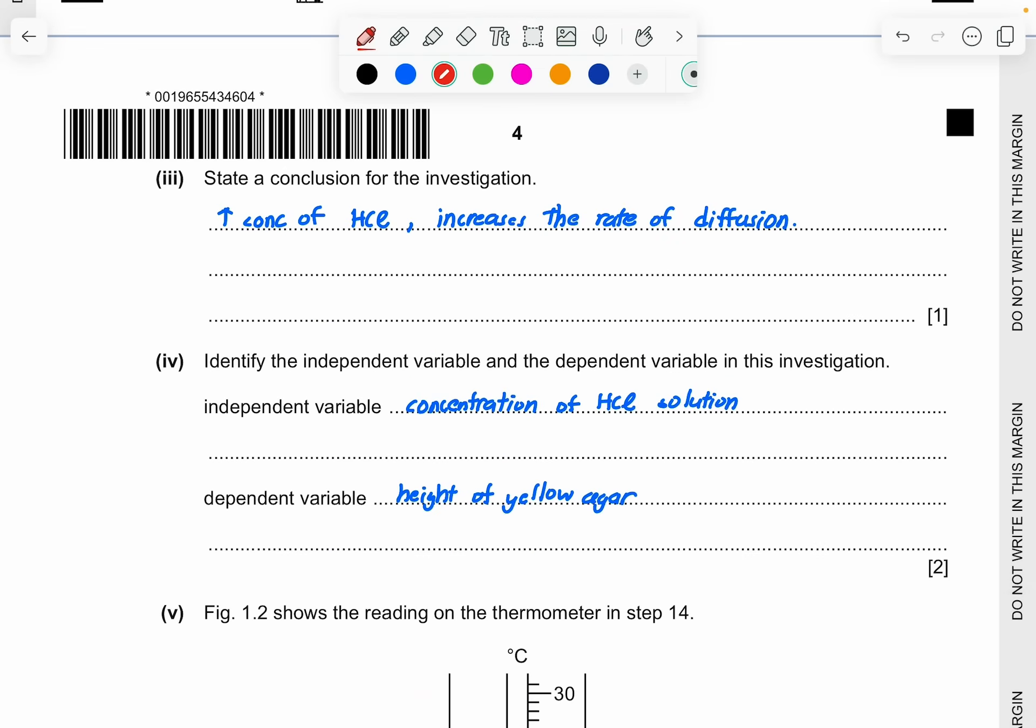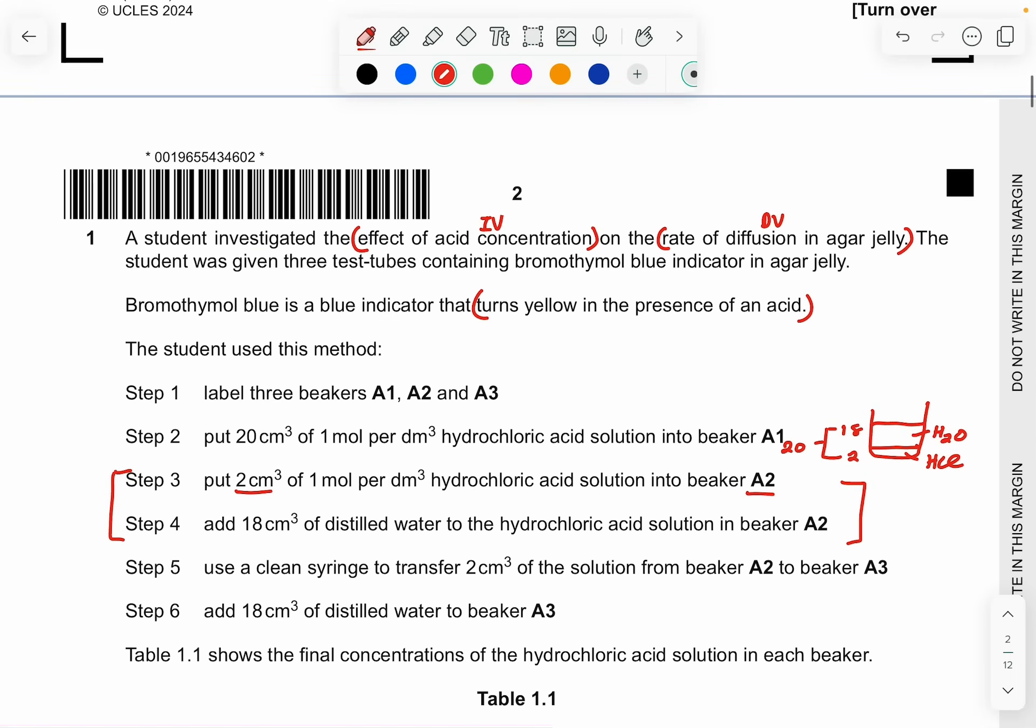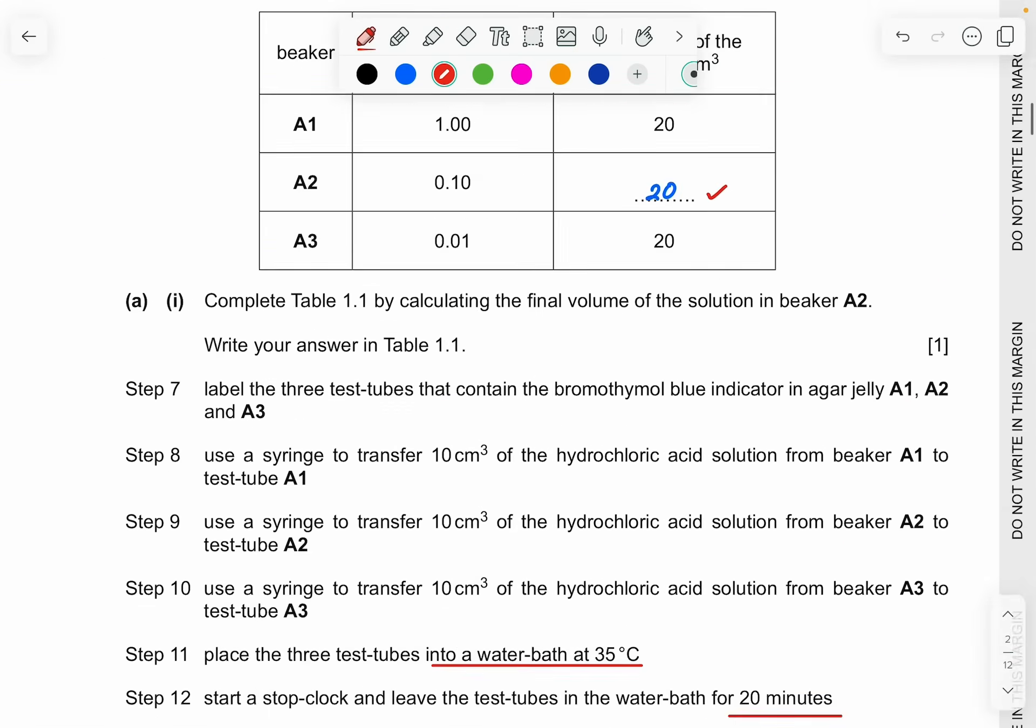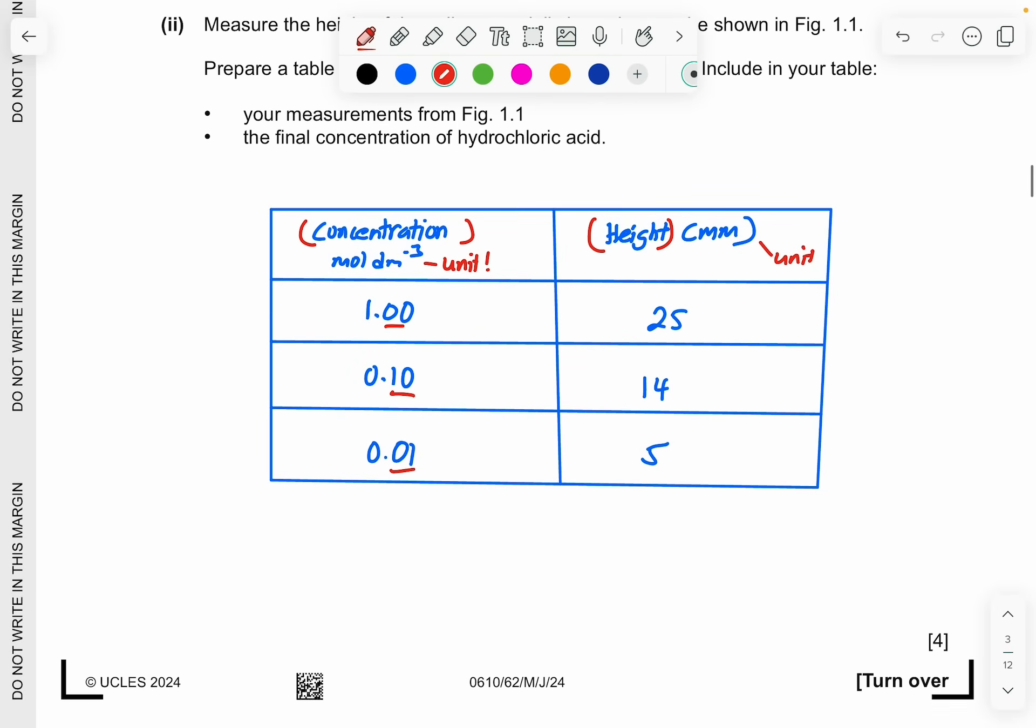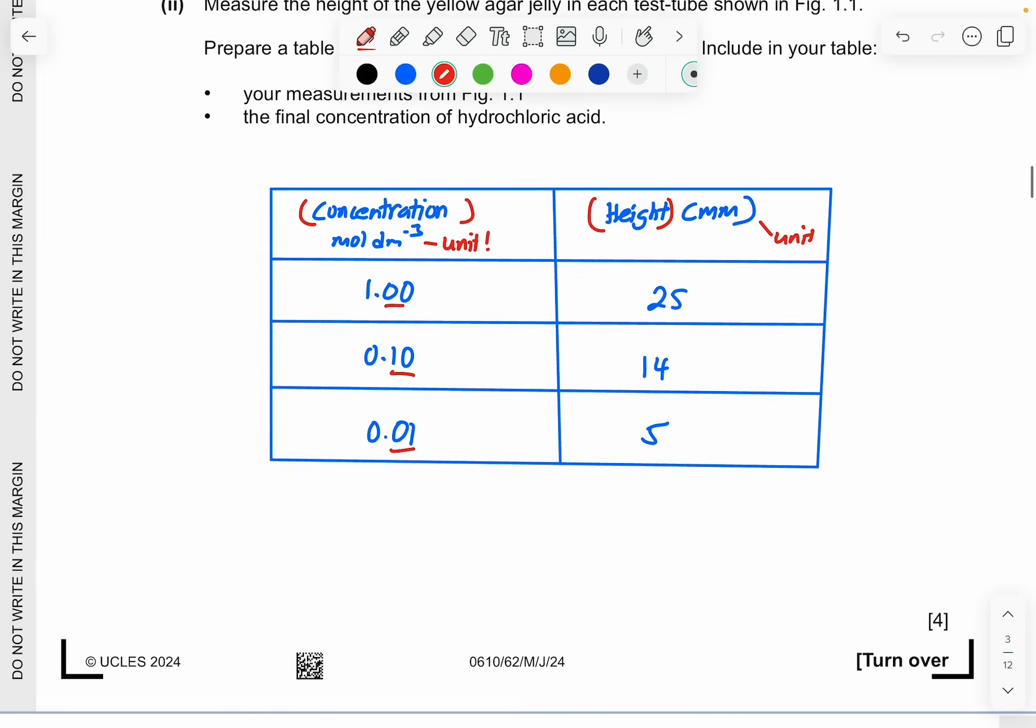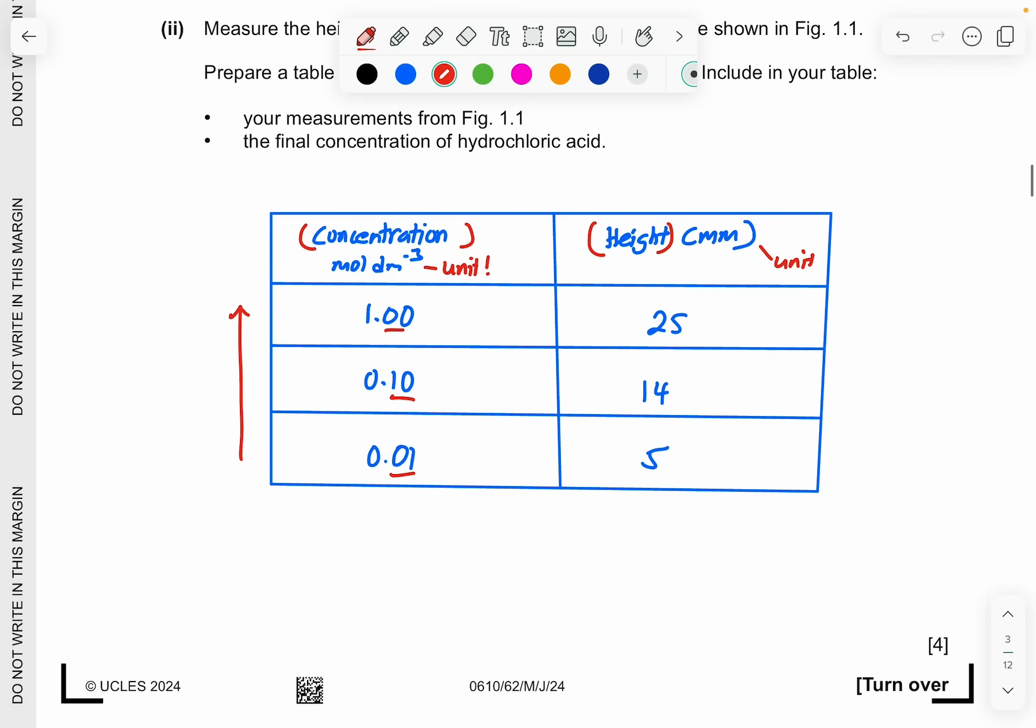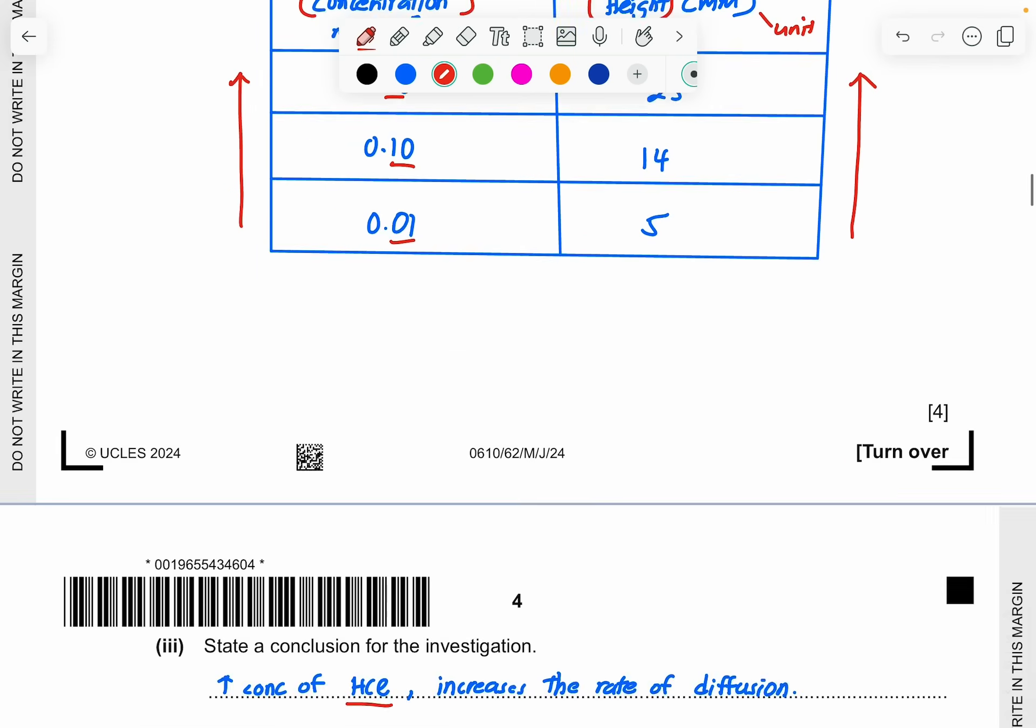So just make sure that your values when you measure using your ruler is correct from the yellow agar jelly here. And you should get 4 marks for this question. So part 3, state a conclusion for the investigation. So the investigation you always refer is back to this part again. So what can you realize is that when the concentration of the hydrochloric acid increases, you can see as the value increases, the concentration, the rate of diffusion also increases. So this is the final answer.